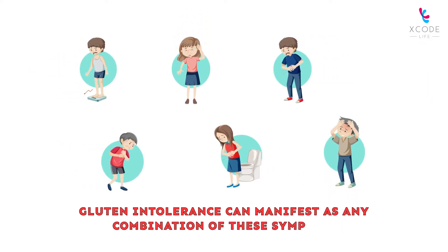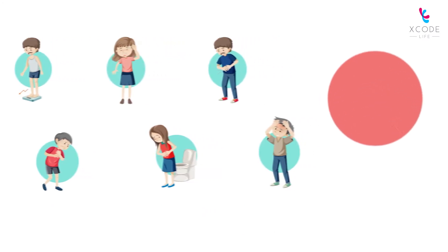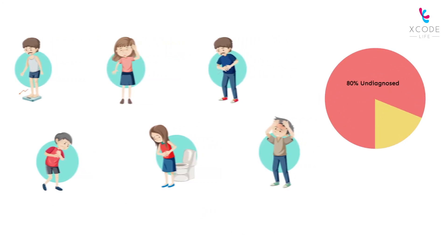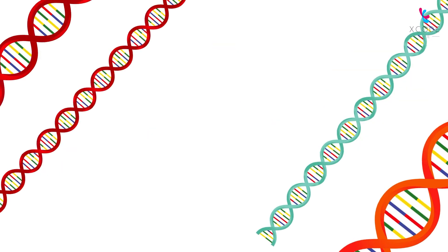Because of this, the diagnosis can be very difficult. In fact, 80 percent of celiac disease cases — a severe form of gluten intolerance — remain undiagnosed. So why do some people react this badly to gluten while others don't?